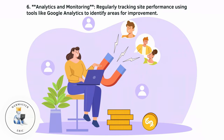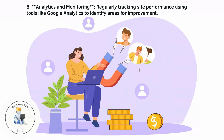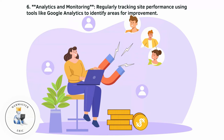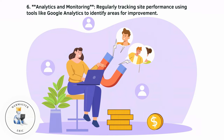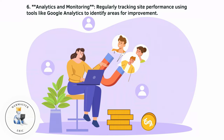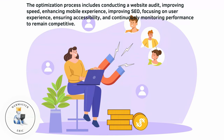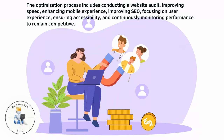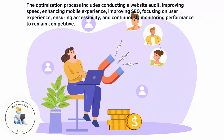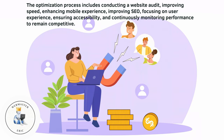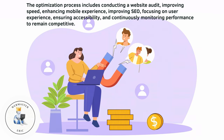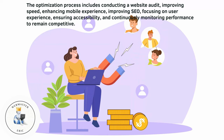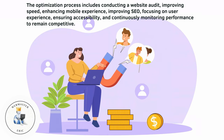Analytics and monitoring involve regularly tracking site performance using tools like Google Analytics to identify areas for improvement. The optimization process includes conducting a website audit, improving speed, enhancing mobile experience, improving SEO, focusing on user experience, ensuring accessibility, and continuously monitoring performance to remain competitive.